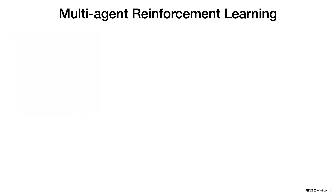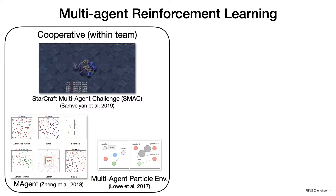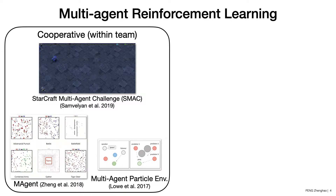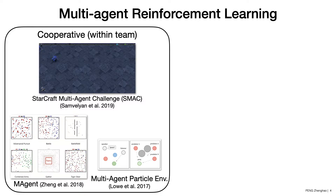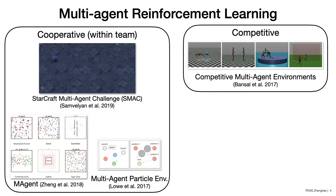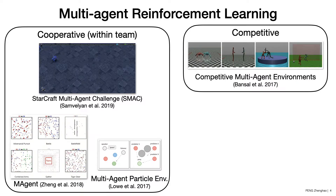There exist many ways to simulate traffic flows. Multi-agent reinforcement learning is a promising approach. However, previous work might not be suitable to this new setting. For example, in a cooperative setting, all agents need to cooperate to maximize a joint reward, which does not lead to realistic behaviors — agents might learn free-riding or sacrificing themselves to maximize the joint reward. In competitive settings, agents form adversarial relationships, which is also not expected in real-world traffic scenarios.